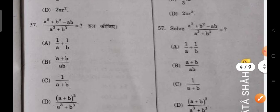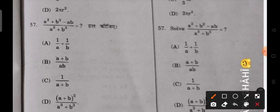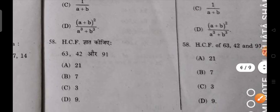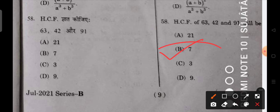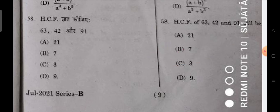Next, you have to solve this equation. When you solve it, 1 upon a plus b is the correct answer. Next, you have to find HCF of 63, 42 and 91. When you find it, 7 is the highest common factor. B is the correct answer.